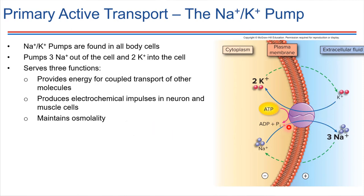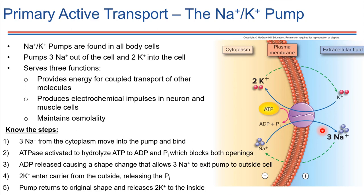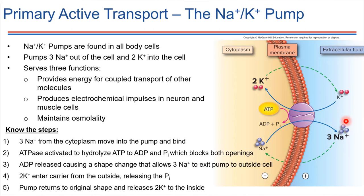Here are the specific steps of how this pump functions. First, three sodium ions bind from the cytoplasm into the pump. Next, ATPase becomes active and hydrolyzes a molecule of ATP. That in turn blocks both openings on the carrier protein. Then ADP gets released, which causes a shape change that forces the sodium ions to leave the carrier protein and exit to the outside of the cell.